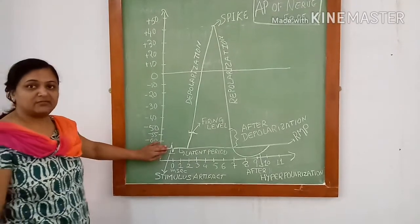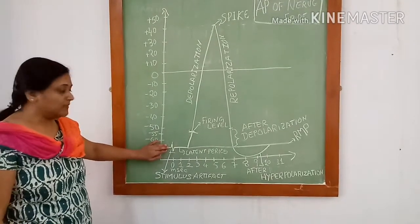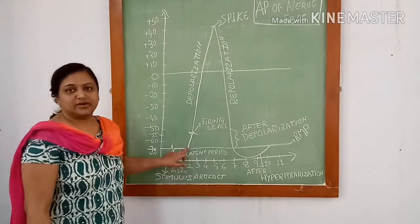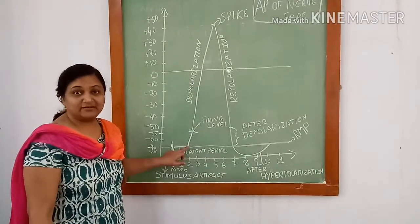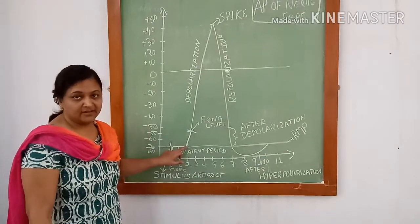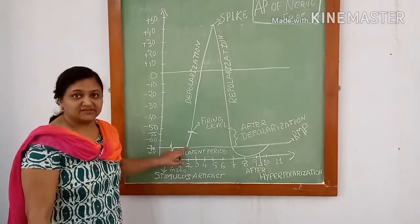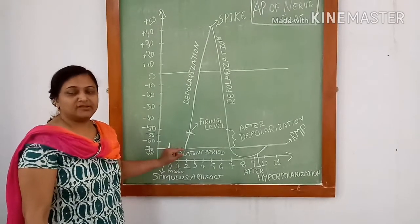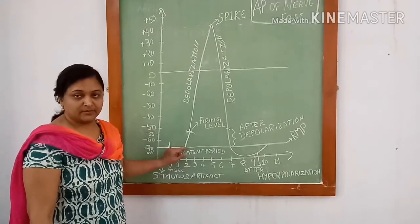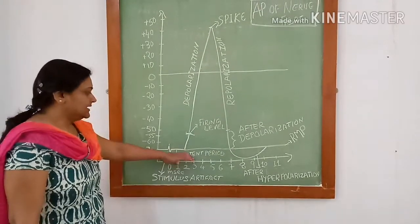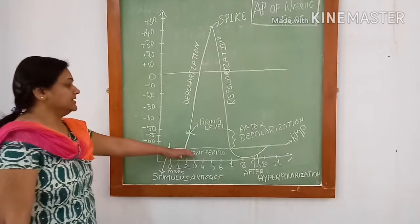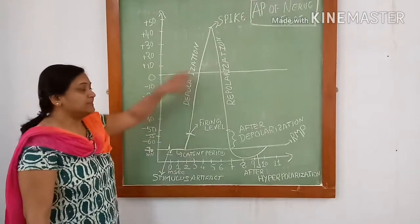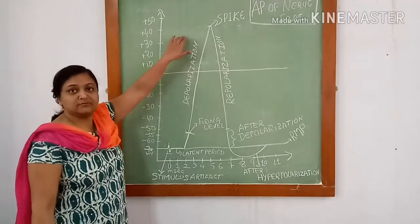Stimulus artifact is followed by an isoelectric period which is known as latent period. This is due to the travel of the impulse along the nerve. The latent period is followed by a depolarization phase.